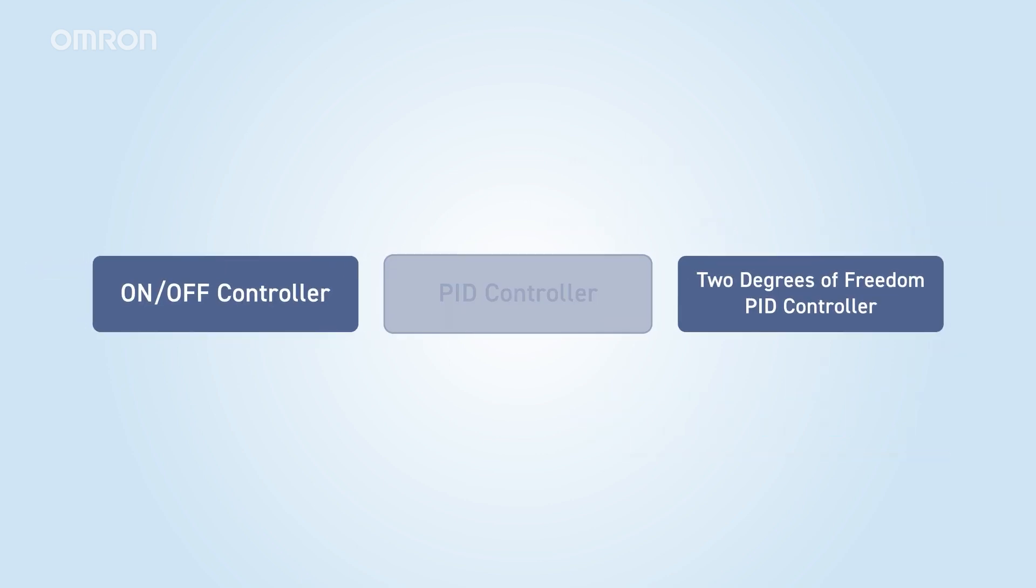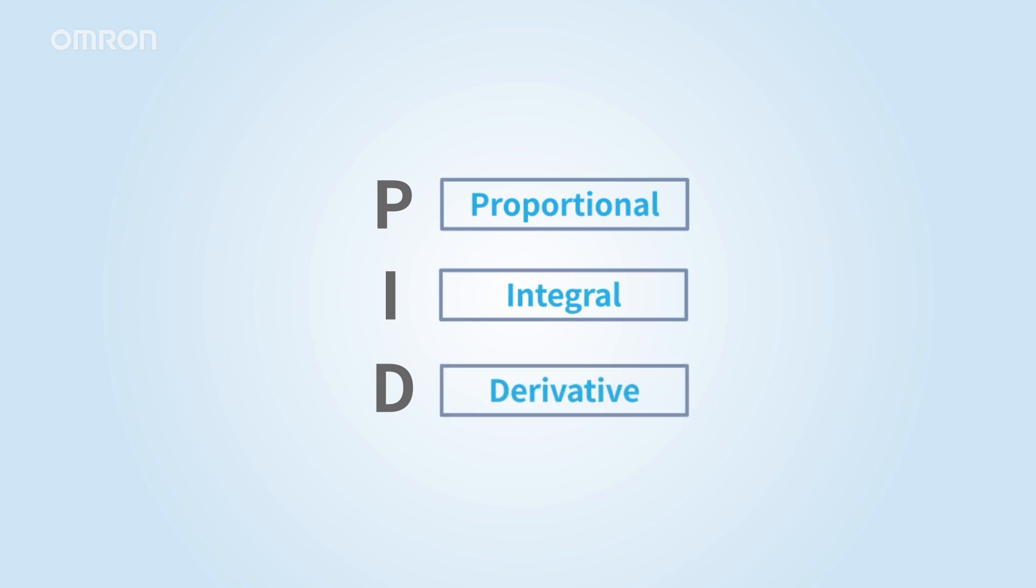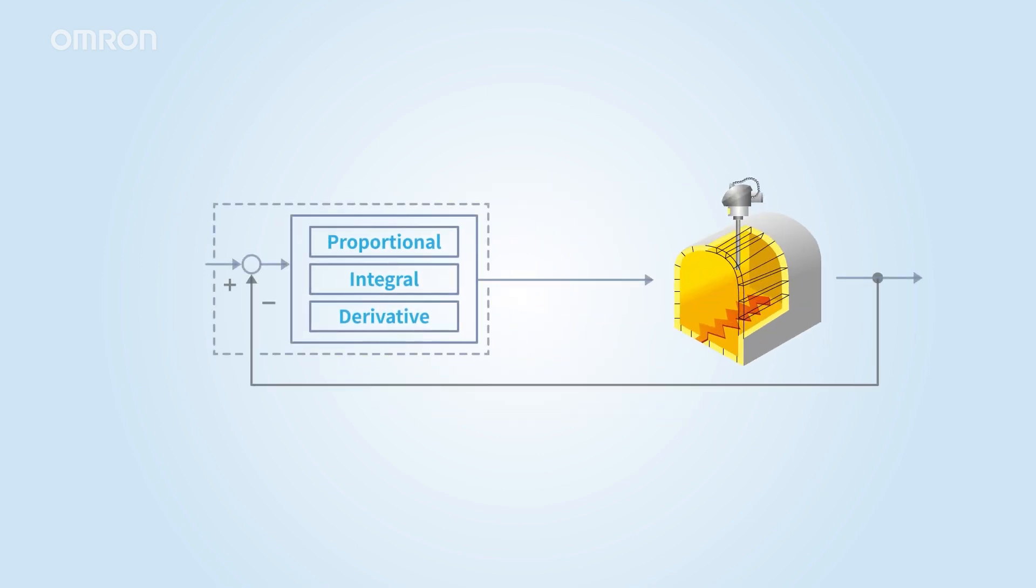Next, let's examine how PID control is used to regulate an electric furnace temperature. PID control combines three key actions: proportional, integral, and derivative. I'll explain the role of each component in detail.